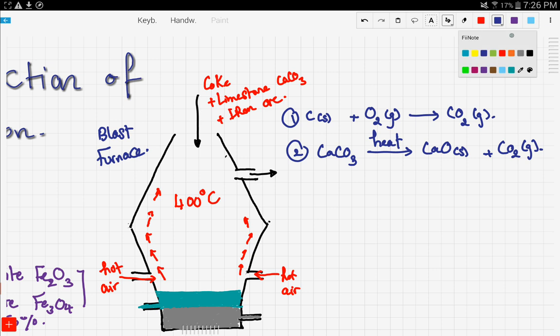The next thing that's going to happen is that the carbon dioxide generated from this reaction will go up in the furnace and react with more coke, giving carbon monoxide gas.